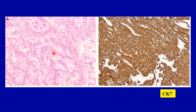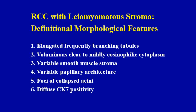Here is another example showing the nice feature of voluminous clear to mildly eosinophilic cytoplasm and the presence of diffuse CK-7 expression. This slide summarizes the definitional morphological features to keep in mind. These are not obvious but are definitely very important, and even though they appear subtle, when applied along with the diffuse CK-7 expression pattern, they often lead you to the correct diagnosis: elongated frequently branching tubules, voluminous clear to mildly eosinophilic cytoplasm, variable smooth muscle stroma, variable papillary architecture, foci of collapsed acini, and diffuse CK-7 positivity.